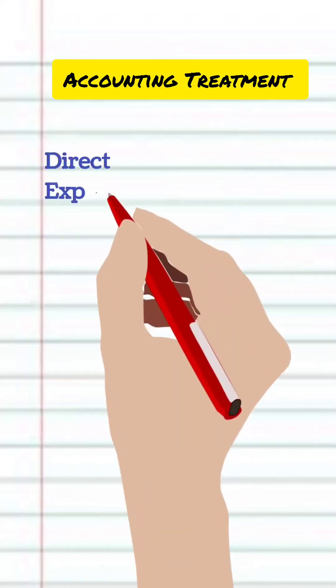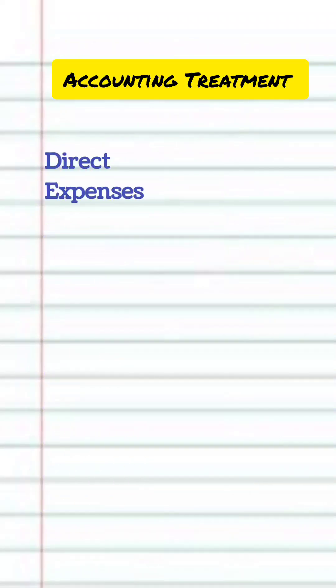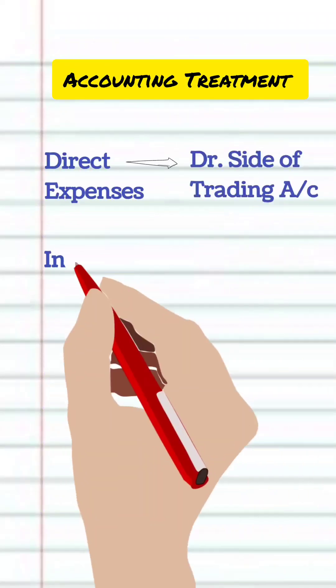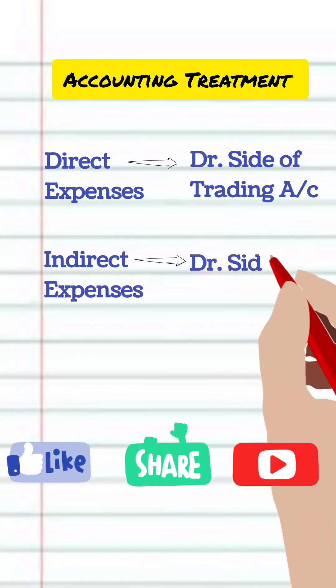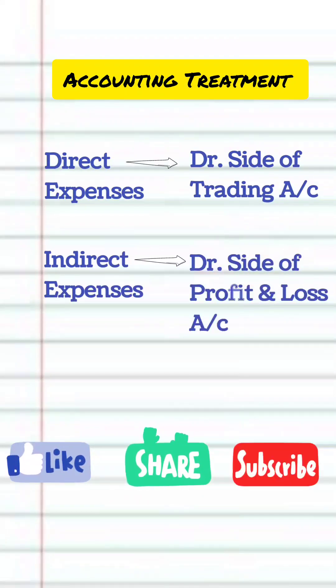Direct expenses are recorded on the debit side of the trading account. Indirect expenses are recorded on the debit side of the profit and loss account.